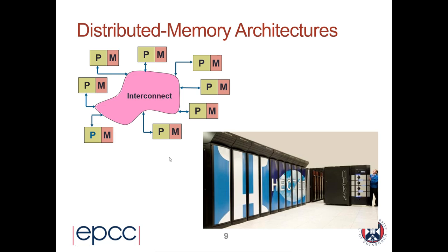In message passing, to send data between processes you send messages, which is exactly what happens physically — the data goes down the interconnect and appears on the other side. Although this course isn't about hardware, it's useful to recognize that the message passing model maps very nicely onto the distributed memory architecture that large parallel computers have, and that's one of the reasons it's been so successful.